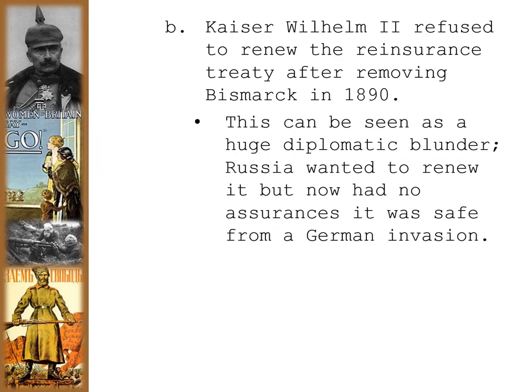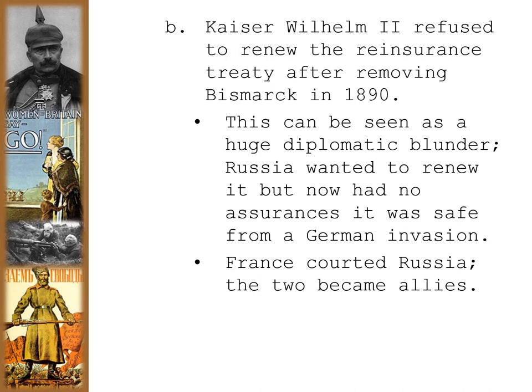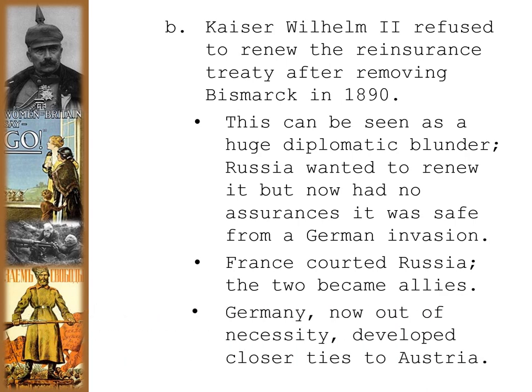This can be seen as a huge diplomatic blunder. Russia wanted to renew this Reinsurance Treaty, but now had no assurances it was safe from a German invasion, and so Russia sought other alliances against a growing Germany. This is why Russia will eventually join the Triple Entente against Germany. France courted Russia, and the two became allies — that was the beginning of the Triple Entente. Germany, out of necessity, developed even closer ties with Austria.